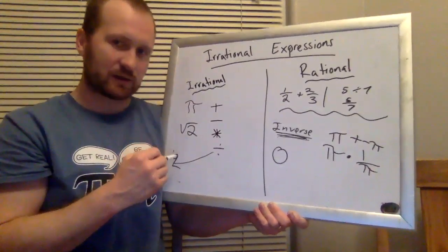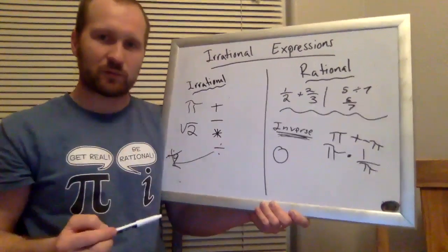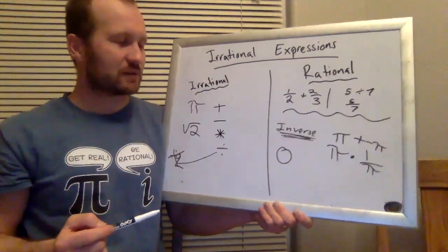It goes here, but division by zero kind of goes in its own category over here. Dividing by zero, we don't want to deal with that. That's just undetermined.